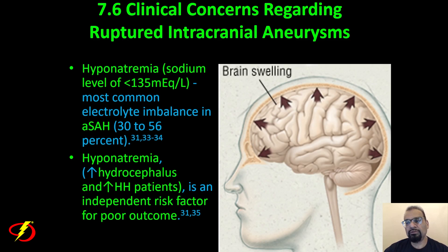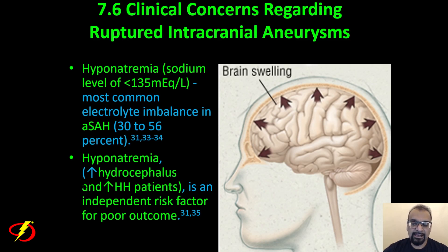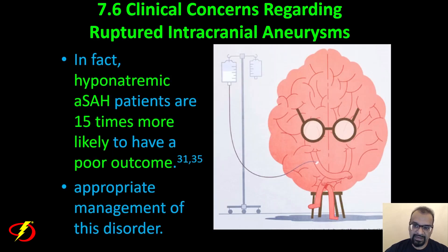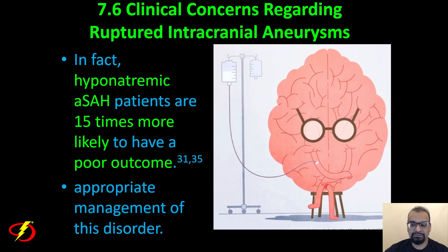Hyponatremia — sodium levels less than 135 mEq/L — is the most common electrolyte imbalance in aneurysmal subarachnoid hemorrhage, occurring 30 to 56 percent of the time. It is found more often in patients with hydrocephalus and higher-grade Hunt-Hess patients, and is an independent risk factor for poor outcome. In fact, hyponatremic aneurysmal subarachnoid hemorrhage patients are 15 times more likely to have a poor outcome, making appropriate management critical.